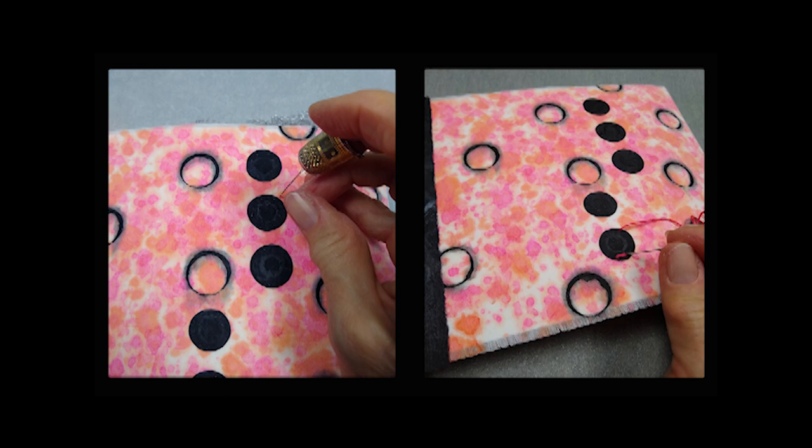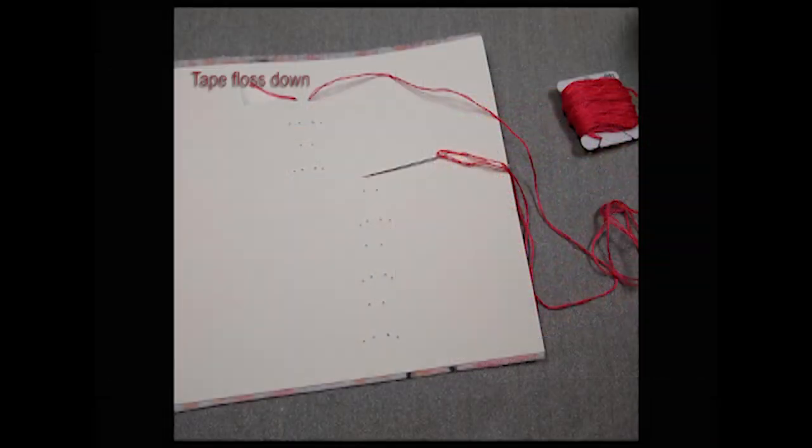And then I'm going to start, obviously, on the back, and when I start, I just tape my fabric down because I don't want to pull a knot through right away when I'm going to be putting some pressure on the floss. So that tape will be removed later, and I will talk about that later as well. I do have some video of the stitching coming up.